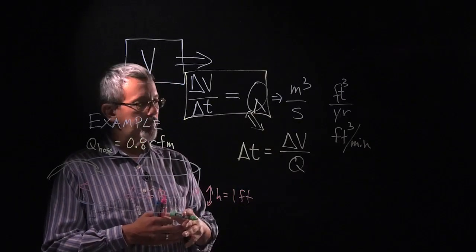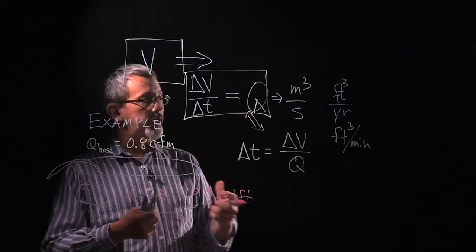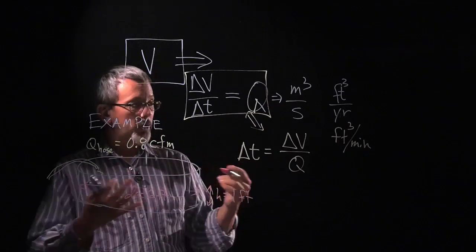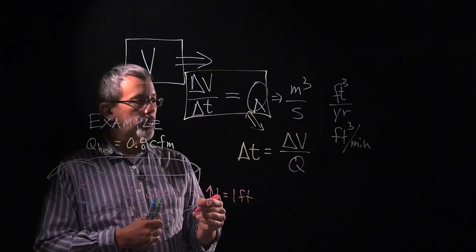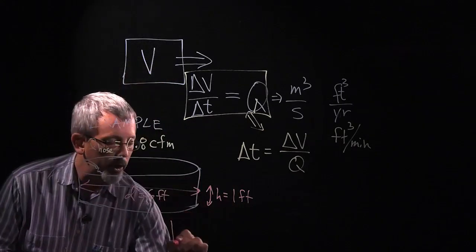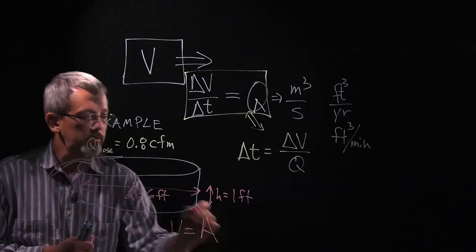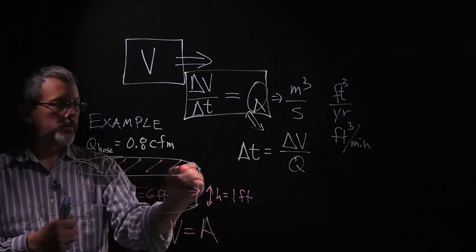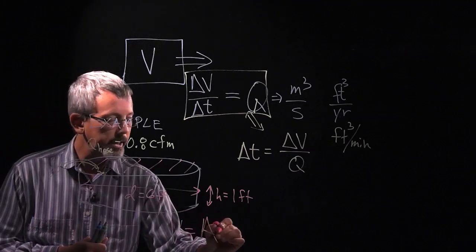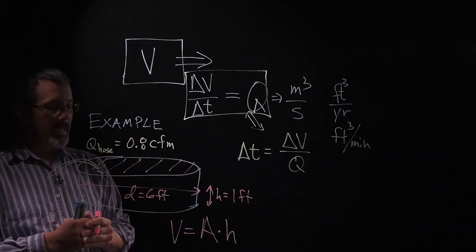Well I can go ahead and plug in my values here. The change in the volume, since we're filling the pool, we're assuming that the volume starts at zero, so it's actually the total volume of the pool. Well in order for me to figure out the total volume of the pool, volume of the pool is equal to the area of the pool times the height that we're gonna fill the water to, or the depth of the water.